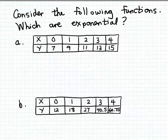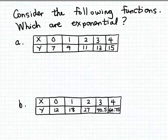The key characteristic of exponential functions we'll use is: in an exponential function, when the input increases by a steady amount, the output will change by a steady percentage amount. For linear functions, when the input increases by a steady amount, the output changes by a steady amount — not a steady percentage amount. But for exponential functions, the output changes by a steady percentage amount.